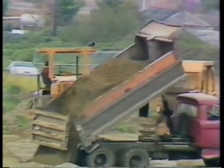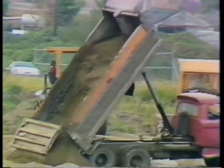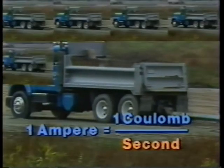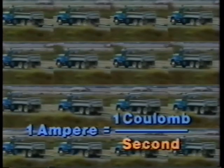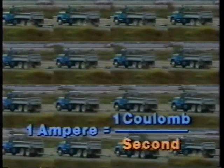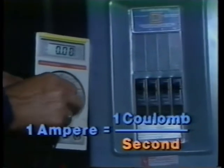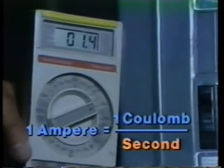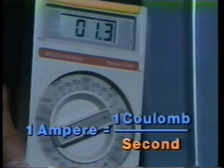The number of electrons in a coulomb of charge is about the same as the number of grains of sand in a dump truck. Fortunately, the unit of electrical rate — the ampere — lets you count dump trucks instead of counting grains of sand. The ampere is exactly one coulomb per second, which makes it very convenient to measure electrical rate because the ampere is a rate.